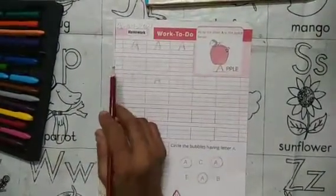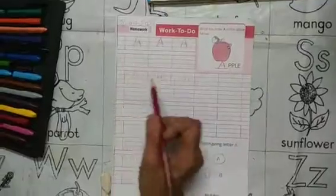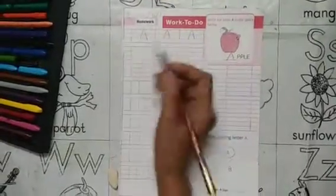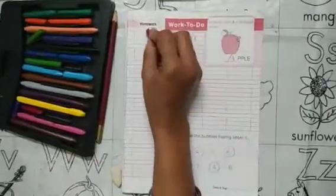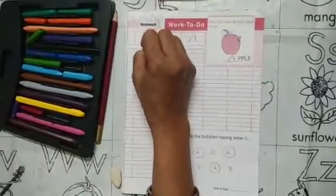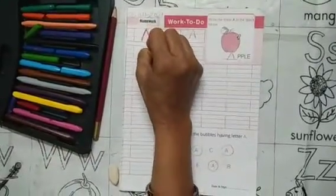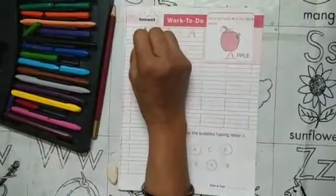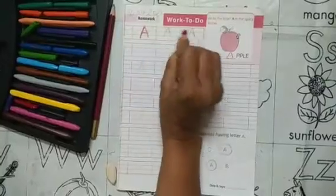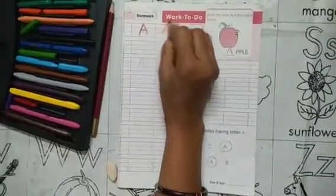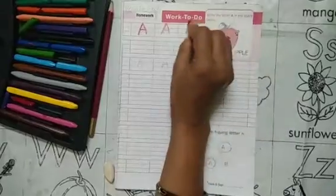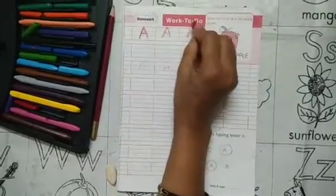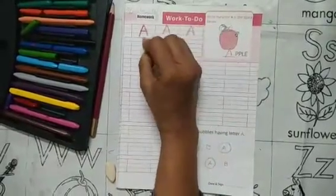Write the letter and trace the letter. Use the pencil. This is A — trace the letter. Slanting line and sleeping line make A. Slanting line, sleeping line, A.